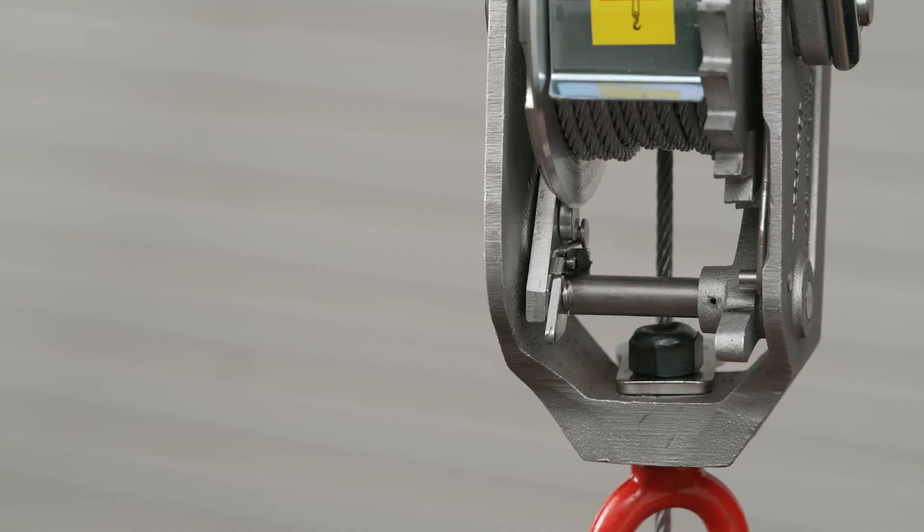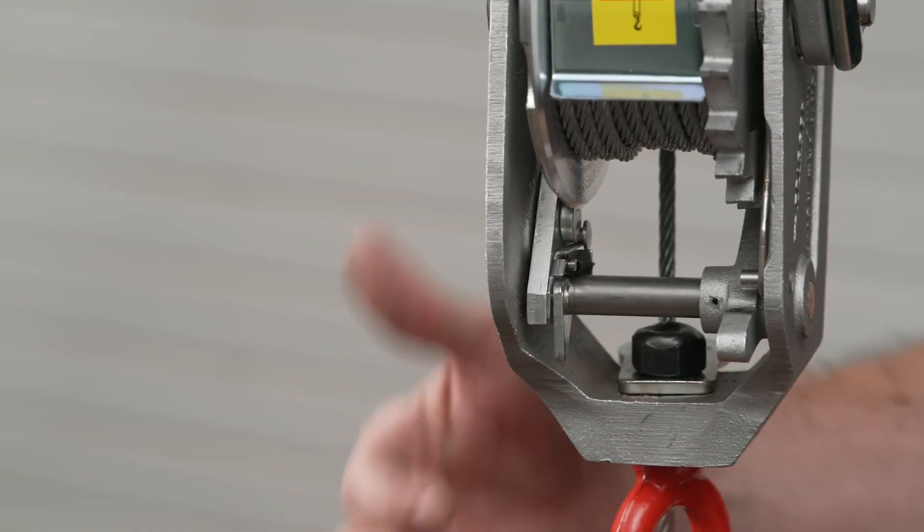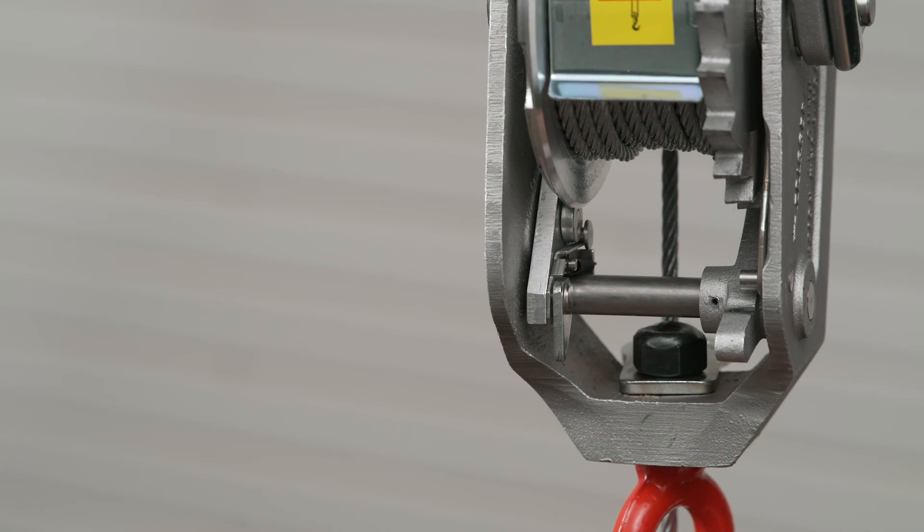After the load has been lowered, flip the rapid lowering switch back to the off position. Do not operate the ratchet winch hoist in lifting or tensioning mode with the rapid lowering switch in the on position.